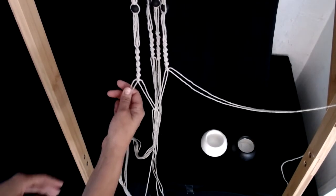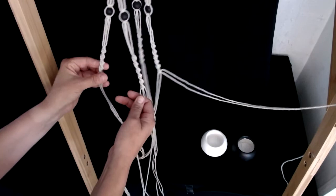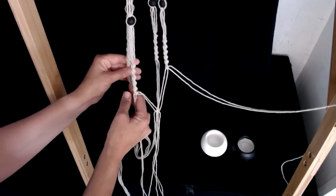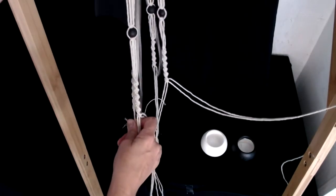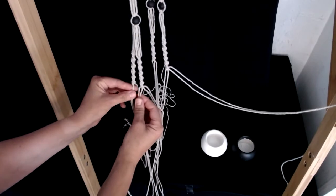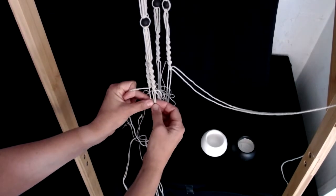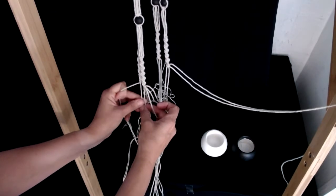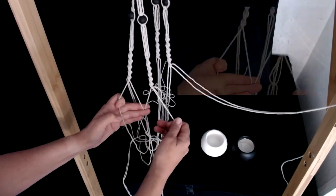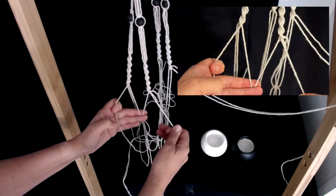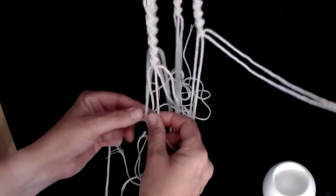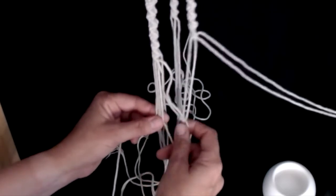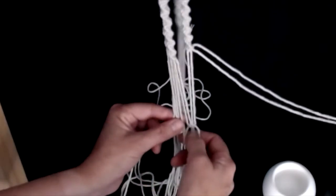We are now going to grab the two that we put to the side earlier and we are going to come around and grab two from the next set along. Again, the two middle ones will be your anchor cords. And we are going to use the other two to knot with. Make sure your knot is the same height as the first knot you've done. And remember these are square knots.